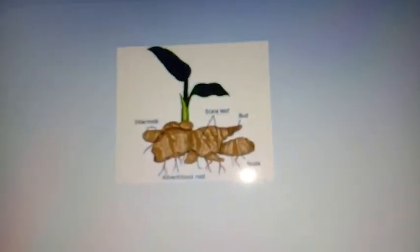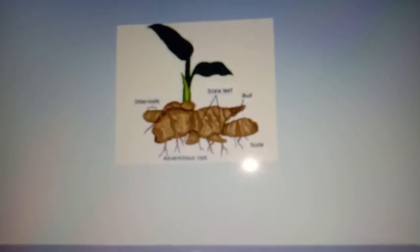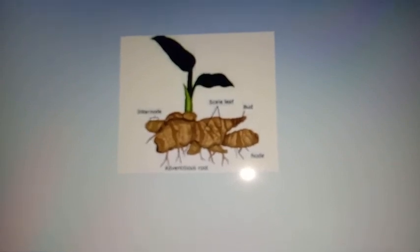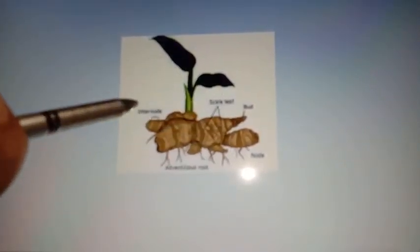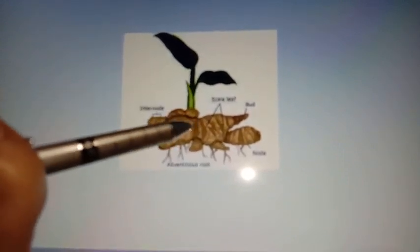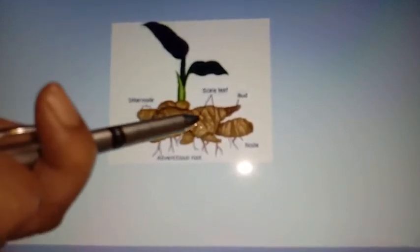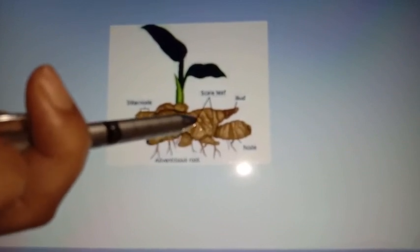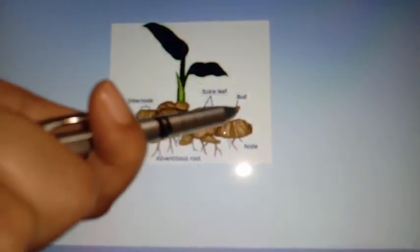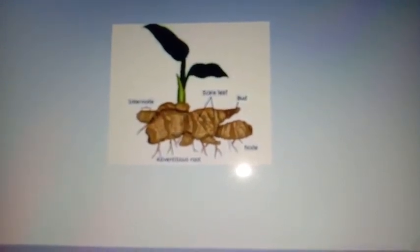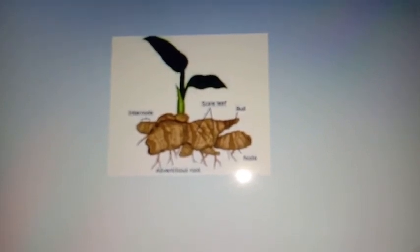Next is scale leaves. Scale leaves are mainly thin or thick, dry, non-photosynthetic leaves. Example is ginger. In the picture you can see ginger — the brown-colored structures are scale leaves. The function of these scale leaves is to protect the buds. These brown structures are non-photosynthetic because they are non-green.